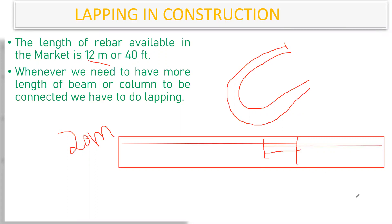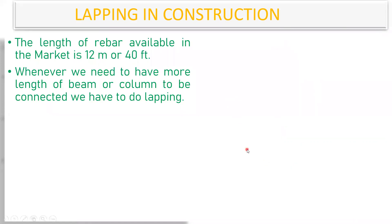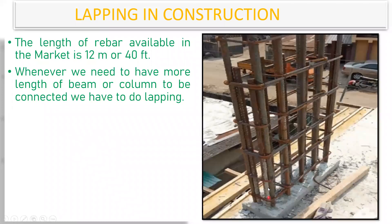We'll try to understand this with a practical drawing. You can see here — this is a column where lapping has been done. This is a bar which has come from the bottom and this is a bar from the top. The overlapping length — from here to here — is called the lap length.